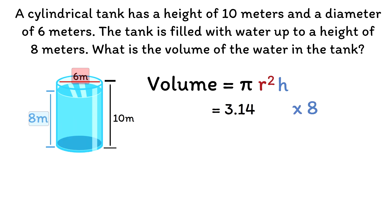We know the height as 8 meters. We don't know the radius. However, we have been given the diameter of the cylinder as 6 meters. Radius is diameter divided by 2. So the radius is 6 over 2, which is 3.